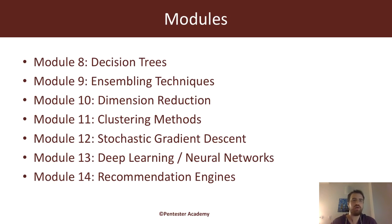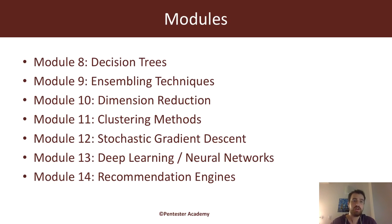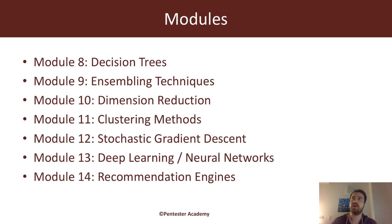Module 12, we will be talking about this mathematical concept called stochastic gradient descent, which is the baseline for data science and machine learning knowledge — gradient descent, and specifically stochastic gradient descent, as a baseline of optimization.